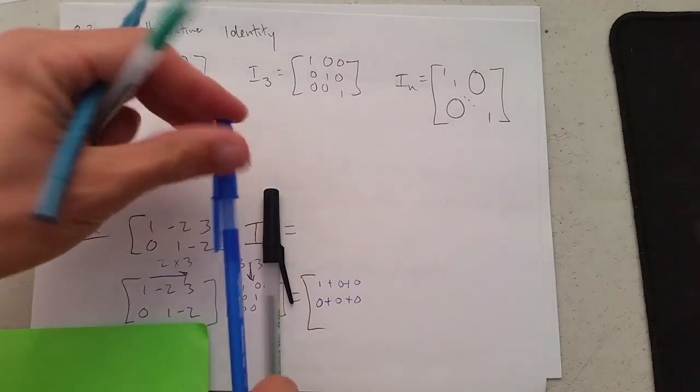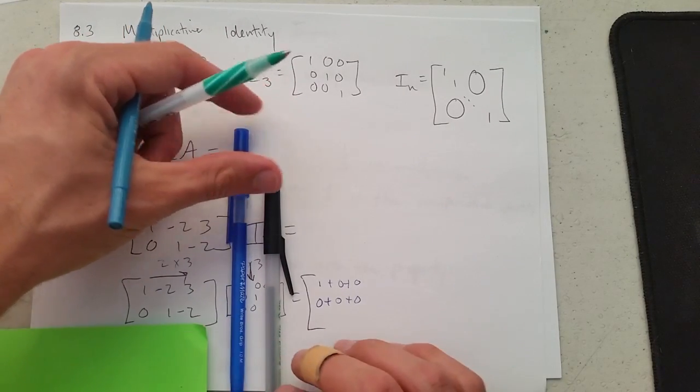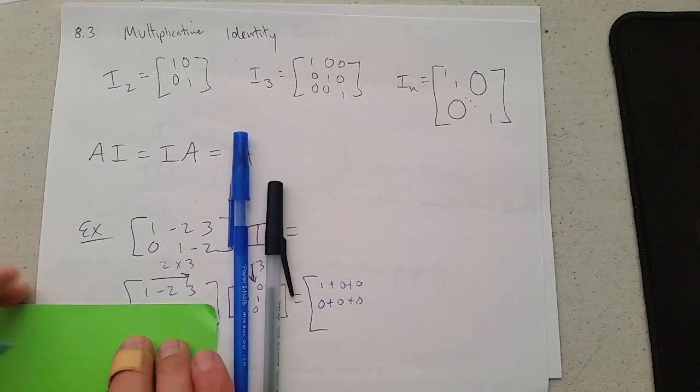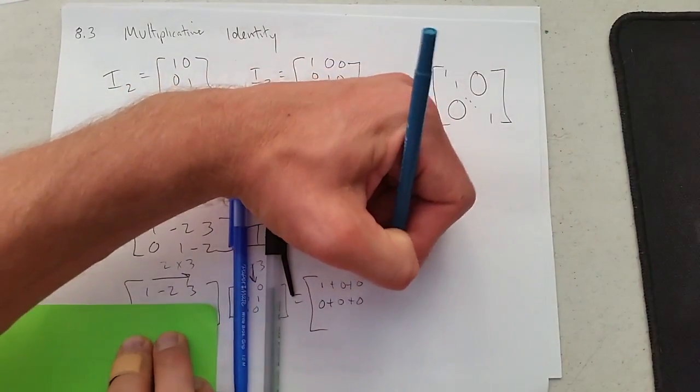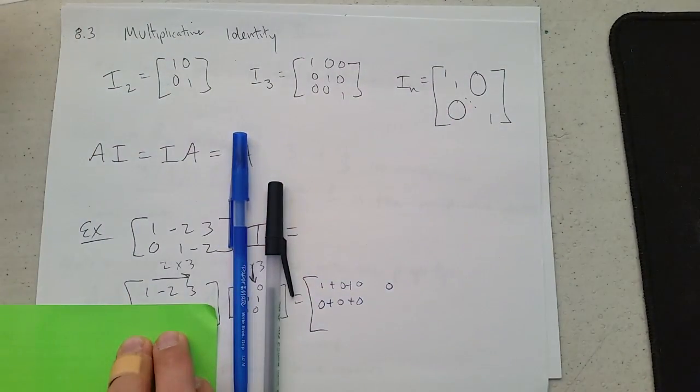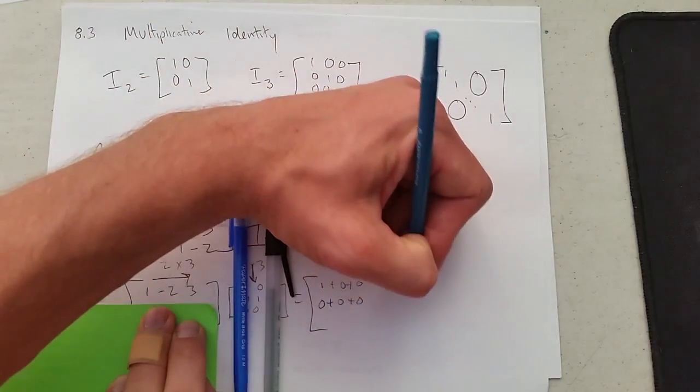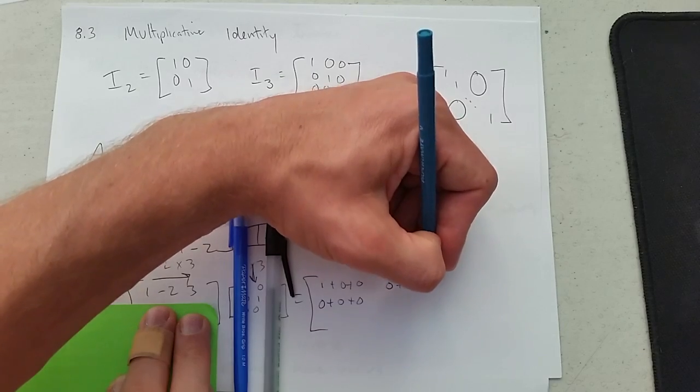So I'm going to block off everything that is not in column 2. So bring a couple extra pens to your final exam. And we're going to go row 1, column 2. So we have 0, make sure you put enough space over here. 0, 1 times 0 is 0, negative 2 times 1 is negative 2, plus 3 times 0 is 0.